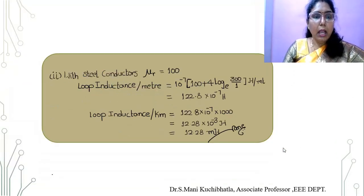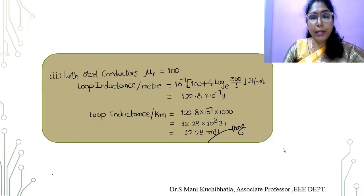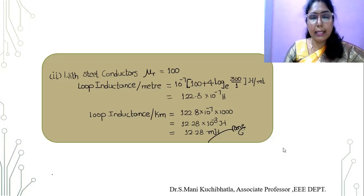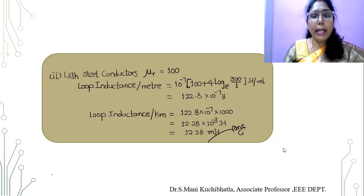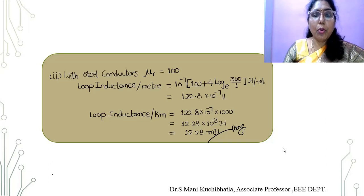Now with the steel conductors where mu_r equals 100, we substitute 100 in place of mu_r because the relative permeability of steel is 100. The loop inductance per meter is 10 to the power minus 7 into (100 plus 4 log to the base e of 300/1) henries per meter. By simplifying we get 122.8 into 10 to the power minus 7 henries. The loop inductance per kilometer is 122.8 into 10 to the power minus 7 into 1000, giving 12.28 millihenries. I hope you understood these two problems.